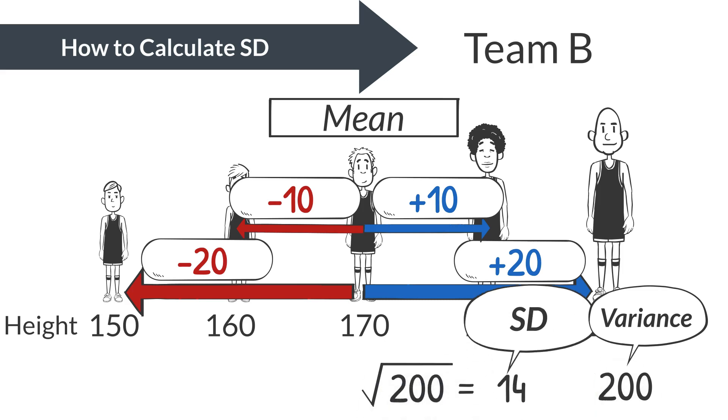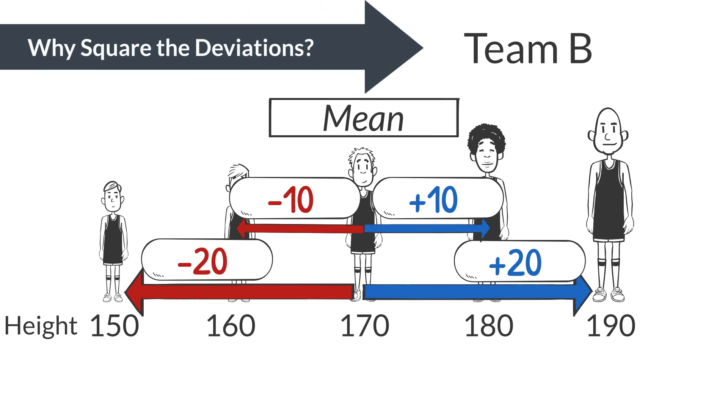It's not too difficult, right? You might wonder, why square the deviations? Without squaring, positive and negative deviations would cancel each other out, making it a poor measure of spread.